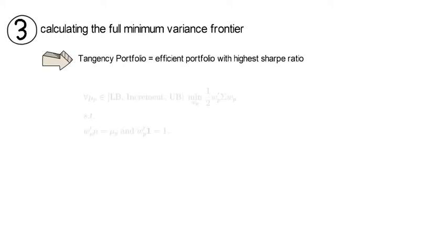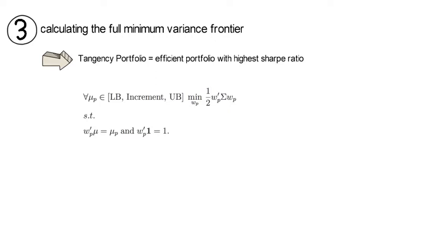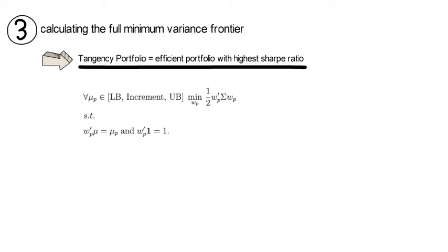Mathematically, you do create a grid for all expected portfolio returns that you want to consider. We call them mu p, and for these you set a lower bound, an upper bound, and an incremental step size. And now you're looking for a portfolio of risky assets that earns the target expected return mu p and that exposes the investor to the least amount of risk. Note here that the tangency portfolio will be the efficient portfolio with the highest Sharpe ratio.